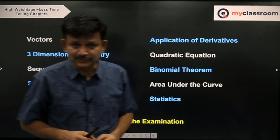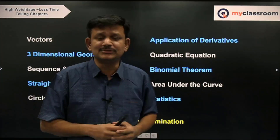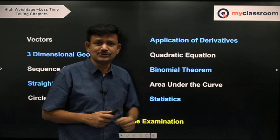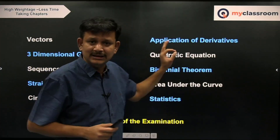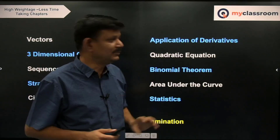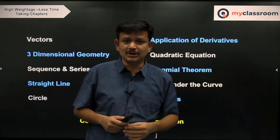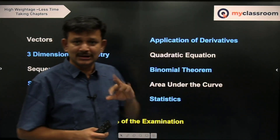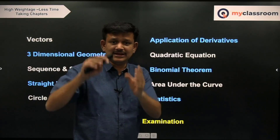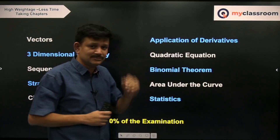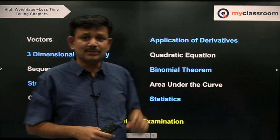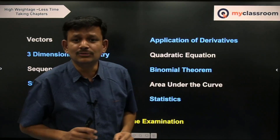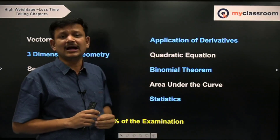Application of Derivatives is very limited in terms of concepts, though there are many varieties of questions. A regularly asked question is on monotonicity — if you simply know how to deal with monotonicity, which takes less than 10 to 15 minutes to learn, you will be able to solve such questions. There is also a combination with Newton-Leibniz theorem: given f(x) as an integral, how to check monotonicity of that function — that concept is also very important. Tangents and normals have simple formulae and will not take much time; angle between two curves is also being asked.